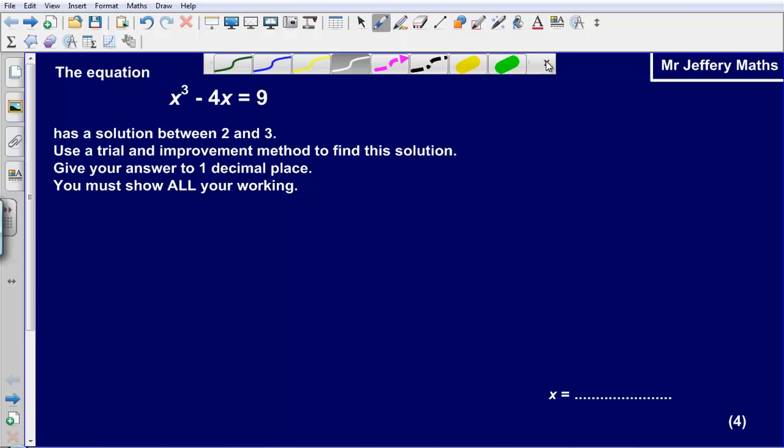Hello and welcome to a video taking a look at trial and improvement. Here we have the equation x cubed minus 4x equals 9, which has a solution between 2 and 3. Use a trial and improvement method to find this solution. Give your answer to one decimal place. You must show all of your working.